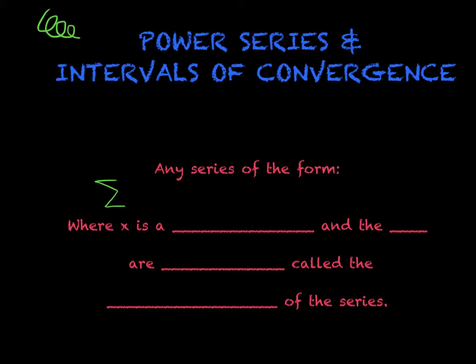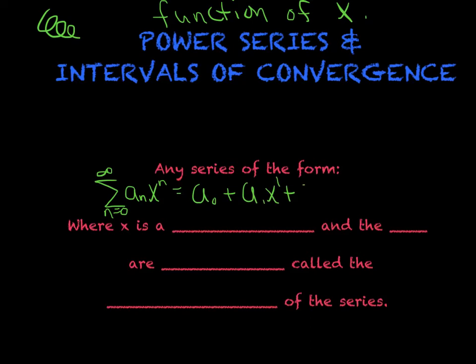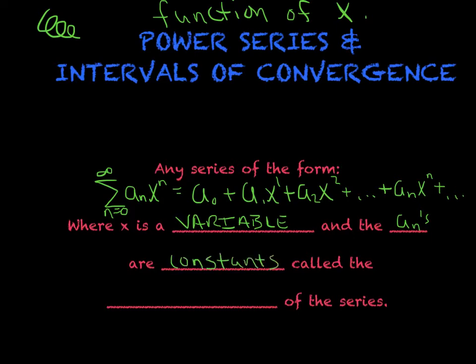A power series is a series that is now a function of X. In its simplest form, it's a series that's a function of X, usually in this form: starts at zero, goes to infinity, and it's A sub N times X raised to the N. As we expand this, we get A sub zero X to the zero, A sub one X to the first, A sub two X squared, yada yada yada, A sub N X to the N, and then of course there's an infinite number of terms. Basically, X is a variable.